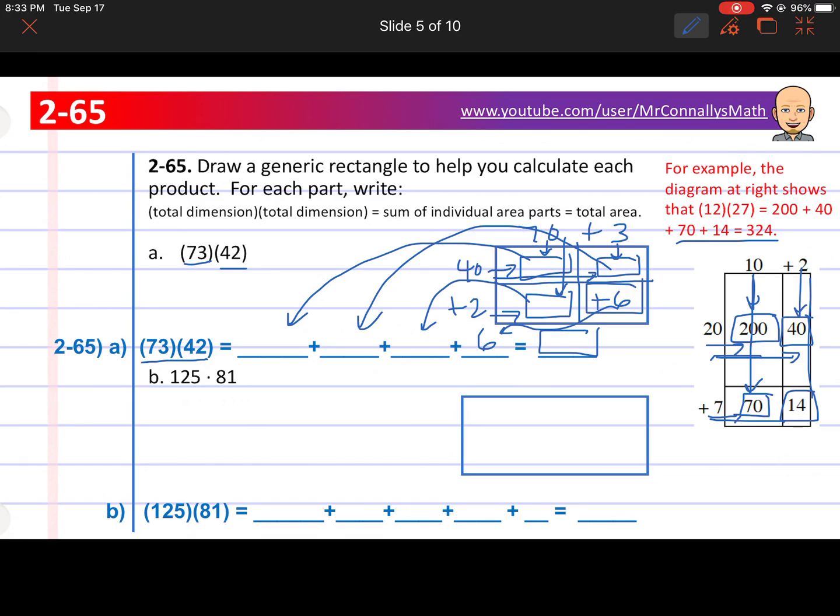Now B is the same thing except we've got a 3 digit number. So that means we're going to break it up into hundreds, tens, and ones. So let's do that on the top. We've got 100, there's 2 tens so plus 20, and then 5 ones plus 5. We broke it up into its place value. Now we'll just draw boxes for each one. And 81 breaks up into 80 plus 1.